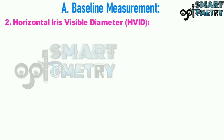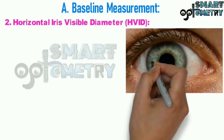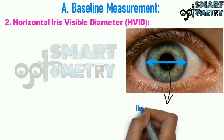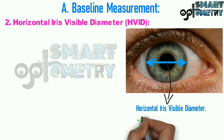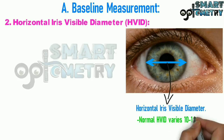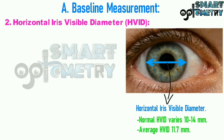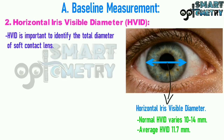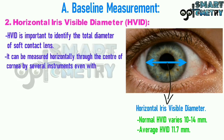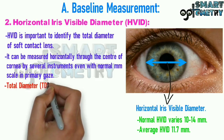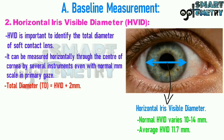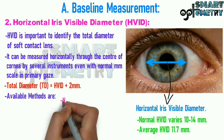2) Horizontal visible iris diameter, or HVID. Normal HVID ranges from 10 to 14 mm, with an average of 11.7 mm. HVID is important to identify the total diameter of a soft contact lens. It can be measured horizontally through the center of the cornea by several instruments, even with a normal millimeter scale. The formula is: total diameter equals HVID plus 2 mm. Available methods include normal millimeter scale, slit lamp, corneal topographer, and Barnard scale.